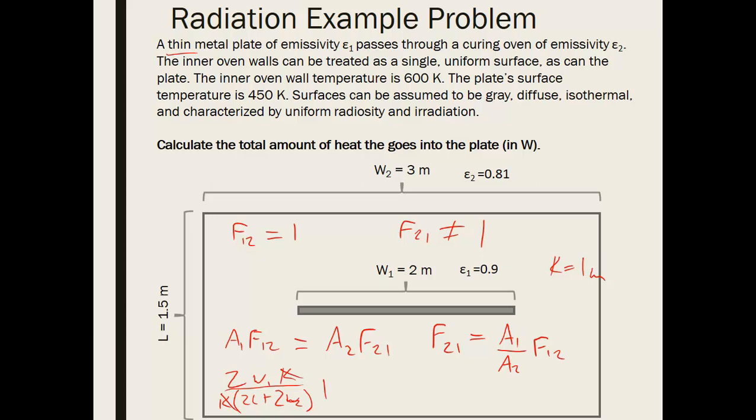So we end up getting that F21 is equal to 2 times W1 divided by 2L plus 2W2. So plugging in numbers, this is going to be 4.